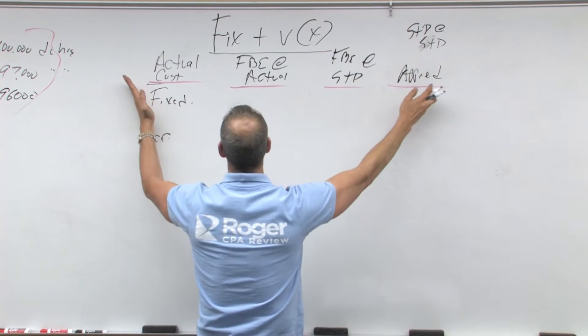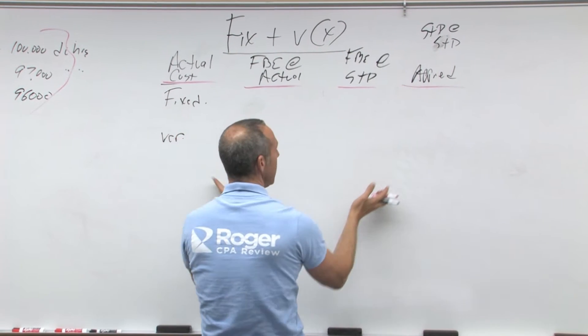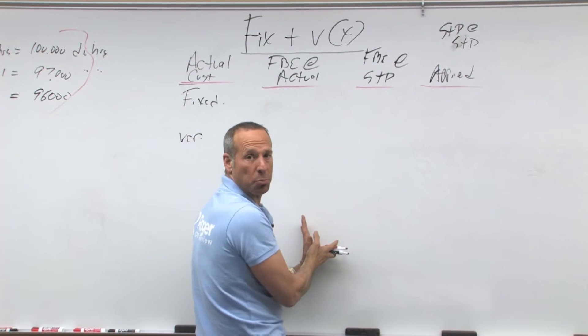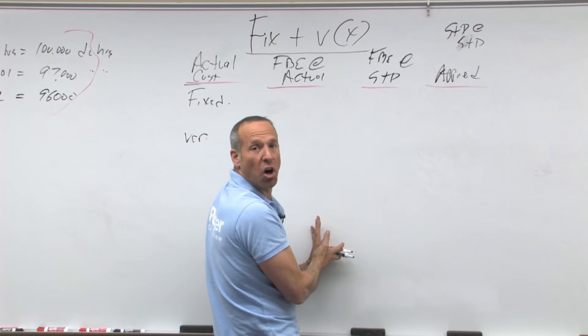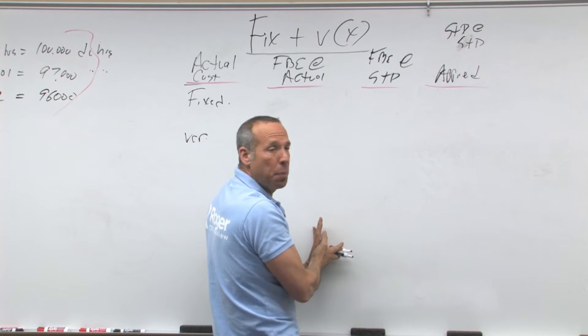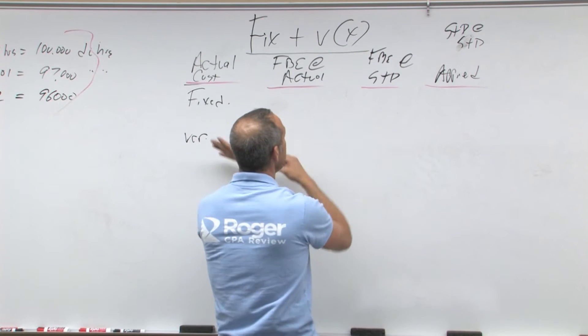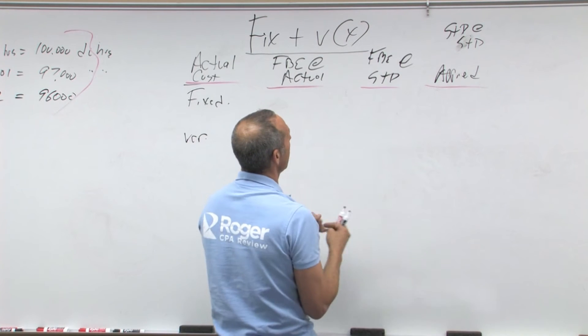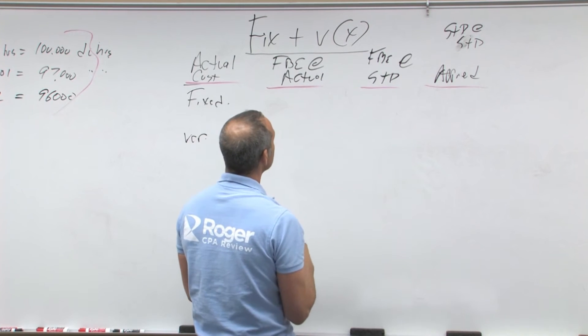The difference between actual and applied is our net overhead variance, but we're also going to take these and break them down a little bit more.